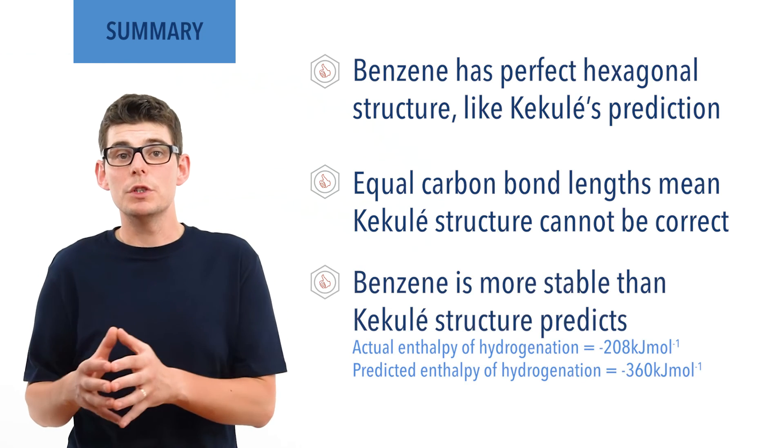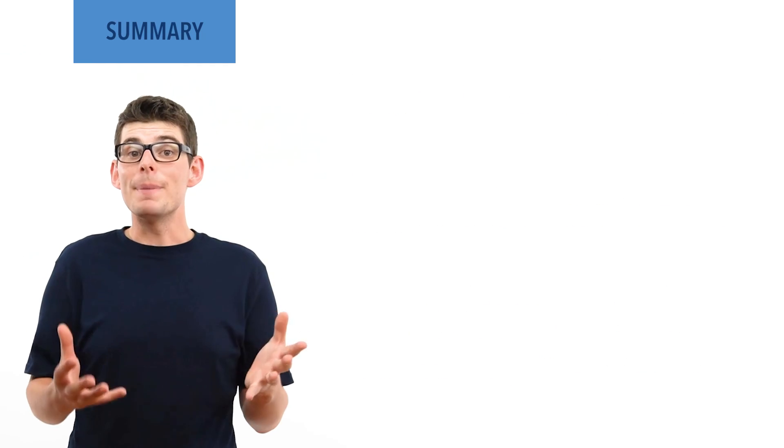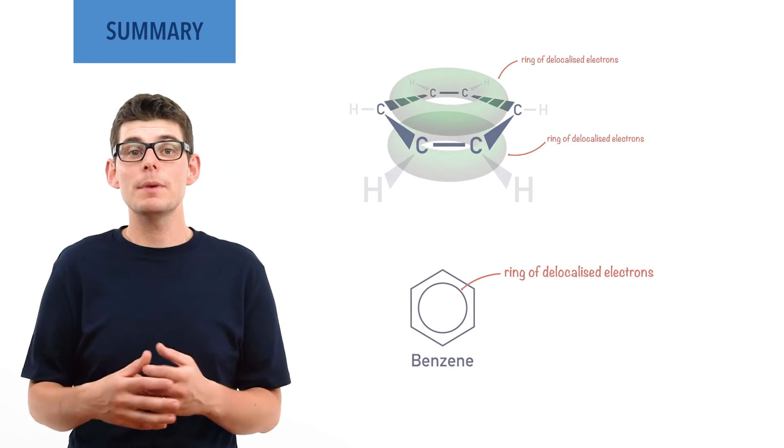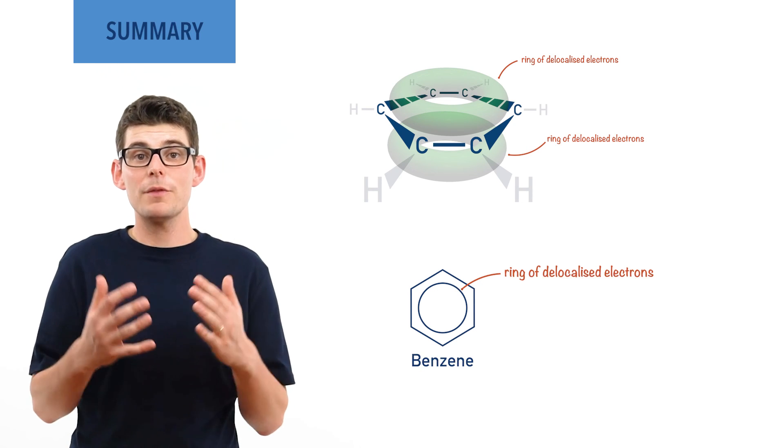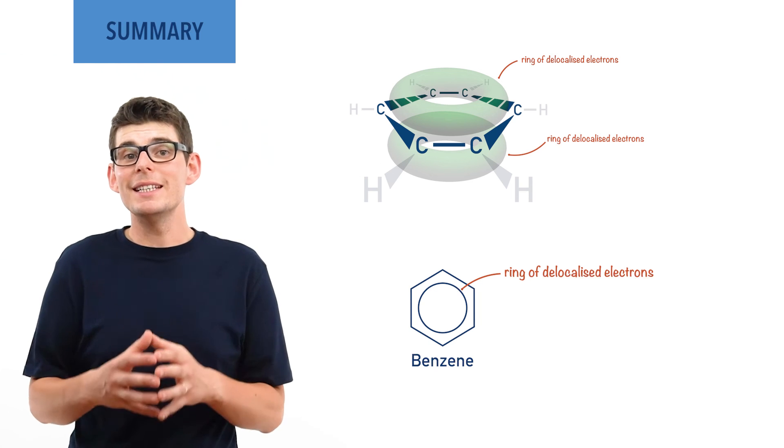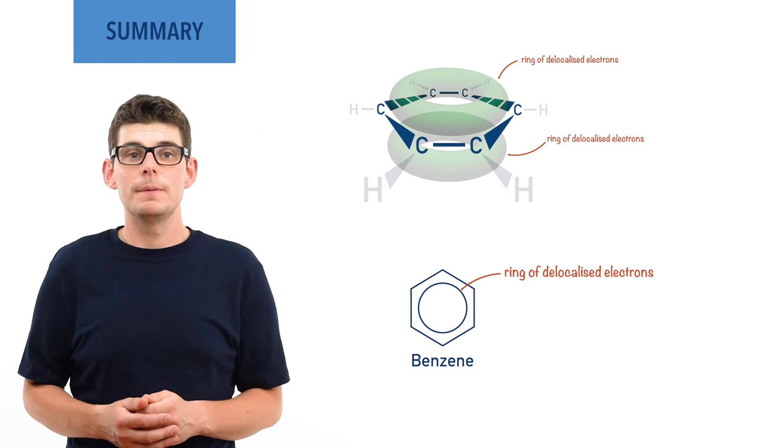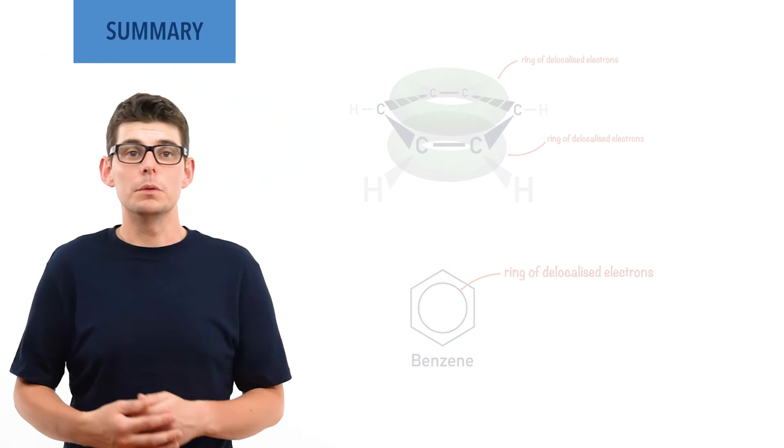Benzene has also been shown to be more stable than the Kekulé structure predicts. In benzene, there is a pi-bonding system where delocalized electrons exist in rings above and below the plane of the carbon ring. This gives benzene its relative stability and makes it less reactive than expected. It is also why benzene reacts with electrophiles.